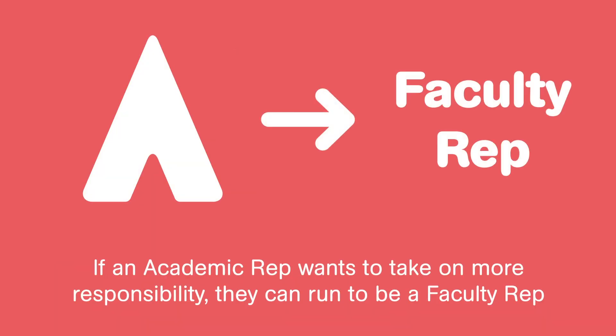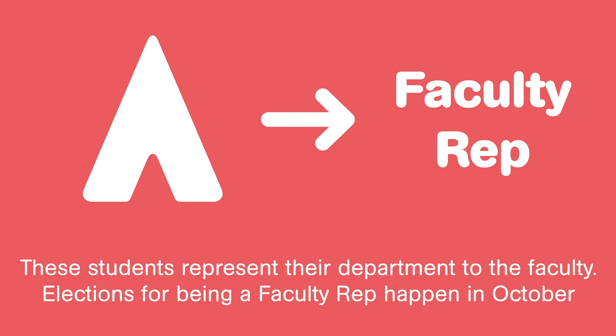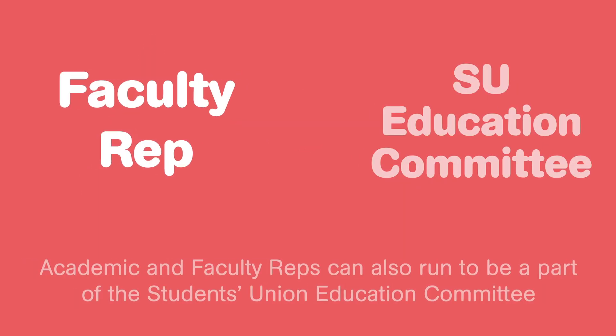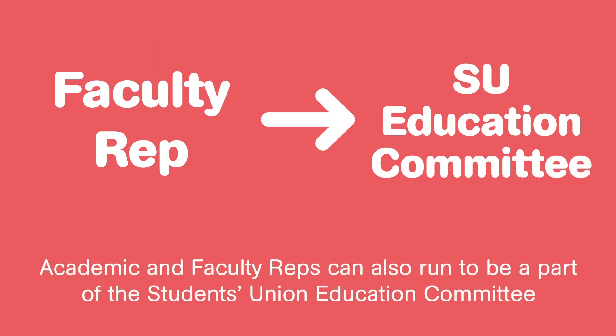If an academic rep wants to take on more responsibility they can run to be a faculty rep. These students represent their department to the faculty. Elections for being a faculty rep happen in October. Academic and faculty reps can also run to be part of the Students' Union Education Committee.